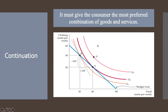The second condition is that the market basket must give the consumer the most preferred combination of goods and services. We will solve the consumer's choice problem graphically. There are three indifference curves describing a consumer's preferences for food and clothing. The outermost curve U3 yields the greatest satisfaction, U2 the next greatest, and U1 the least.